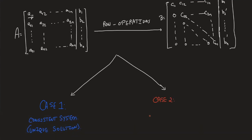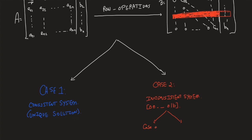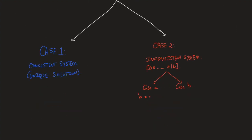The other case: you get an inconsistent system. That happens when, while doing row operations, one of the rows contains all zeros on the left-hand side. If one row gives zeros everywhere except what comes in the last entry — B — then it's an inconsistent system, which has two further sub-cases. Case A: if B is non-zero, we have no solution. Case B: if B is zero, we get infinitely many solutions.